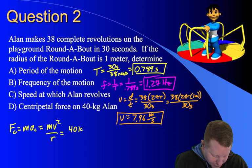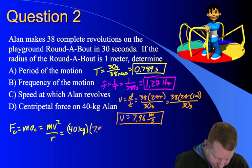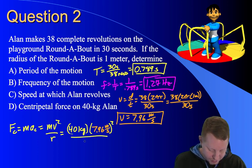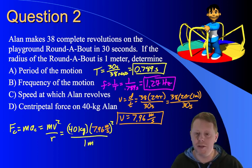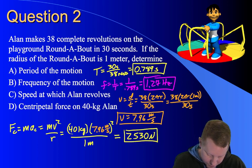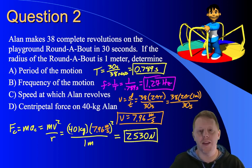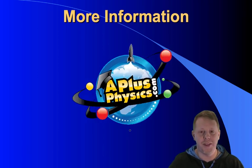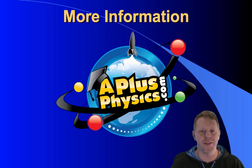Alan's mass is 40 kilograms. We just found his speed as 7.96 meters per second. And that's squared, v squared, divided by our radius, 1 meter. And I come up with a centripetal force of around 2,530 newtons.